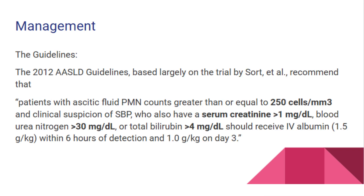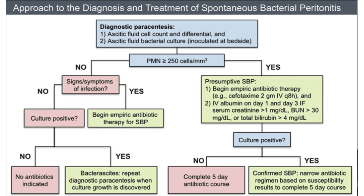The 2012 AASLD guidelines, based largely on the trial by Sort et al., recommend that patients with ascitic fluid PMN counts greater than or equal to 250 cells/mm³ and clinical suspicion of SBP, who also have a serum creatinine more than 1 mg/dL, BUN more than 30 mg/dL, or total bilirubin more than 4 mg/dL, should receive albumin at 1.5 grams/kg within 6 hours of detection and 1.0 grams/kg on day 3. Approach to diagnosis and treatment of spontaneous bacterial peritonitis.